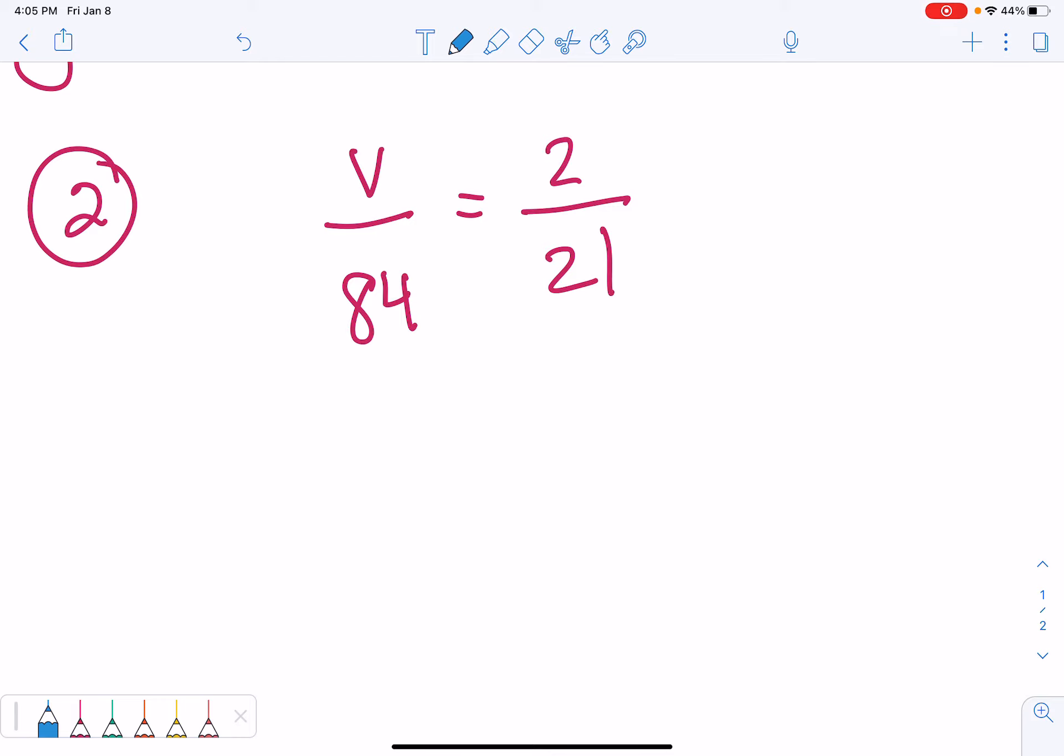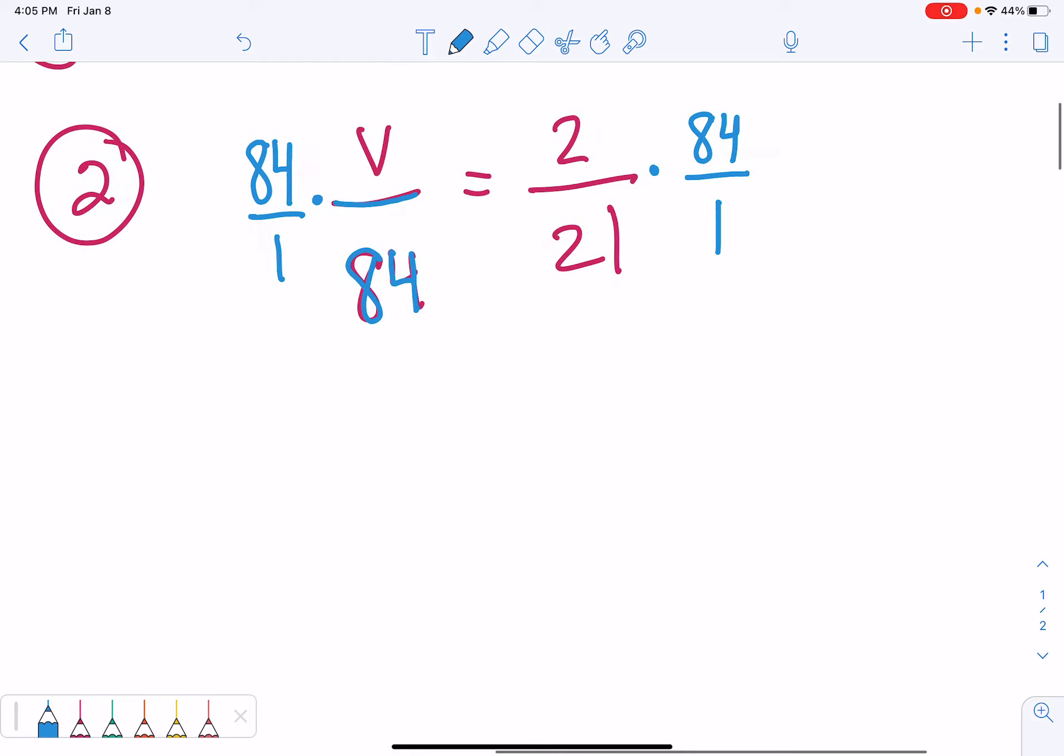So, to solve for v, we need to undo dividing by 84. So, we multiply to undo dividing on both sides. On the right side, we have 2 times 84, which is 168, and 1 times 21, which is 21.